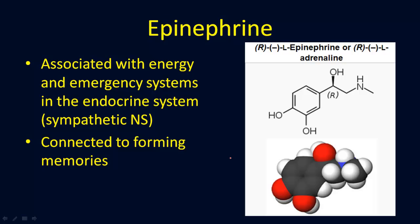Epinephrine, when it's in the brain, functions as a neurotransmitter. When it's in the bloodstream, it operates within the endocrine system as a hormone. It's associated with energy and the emergency response systems, primarily the sympathetic nervous system and the fight-or-flight response. In the brain, it's also connected to the formation of memories.